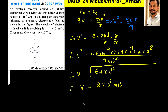An electron revolves around an infinite cylindrical wire having uniform linear charge density 2×10⁻⁸ coulomb per meter in a circular path under the influence of an attractive electrostatic field, as shown in the figure. The velocity of the electron with which it revolves is dash ×10⁶ meter per second. Given: mass of electron is 9×10⁻³¹ kg.